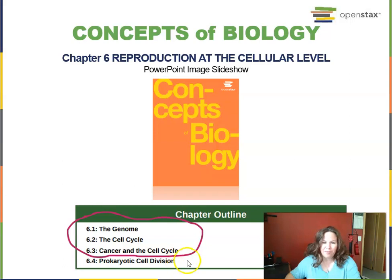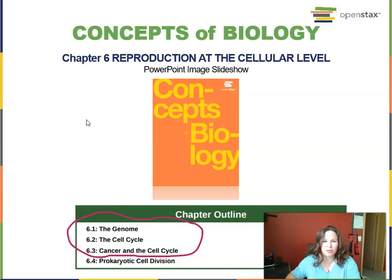Welcome back, everybody. We're on to Chapter 6, which is Reproduction at the Cellular Level in our Concepts of Biology textbook. During this lecture, we'll be looking at the first three sections: 6.1, the genome; 6.2, the cell cycle; and 6.3, cancer and the cell cycle.